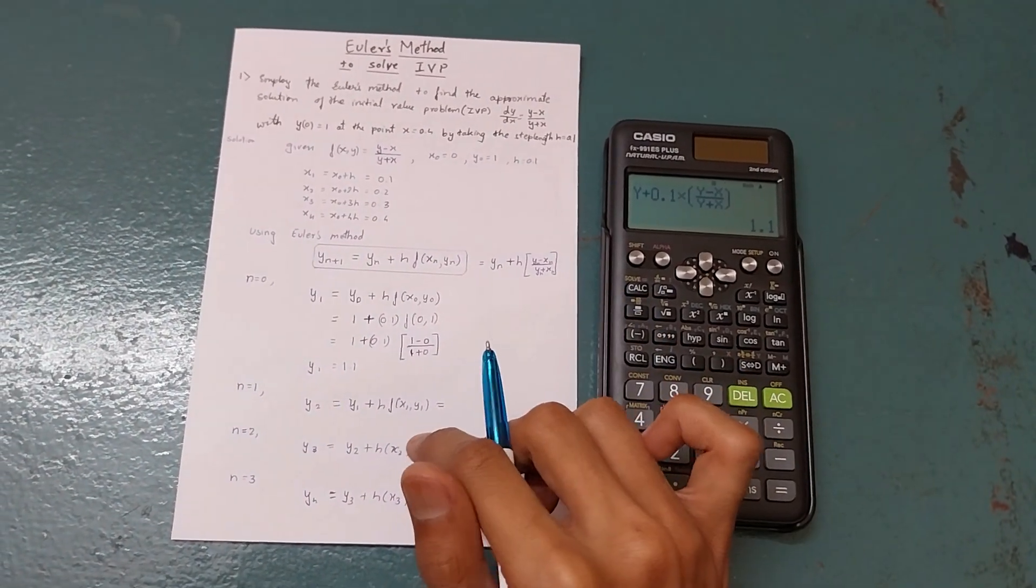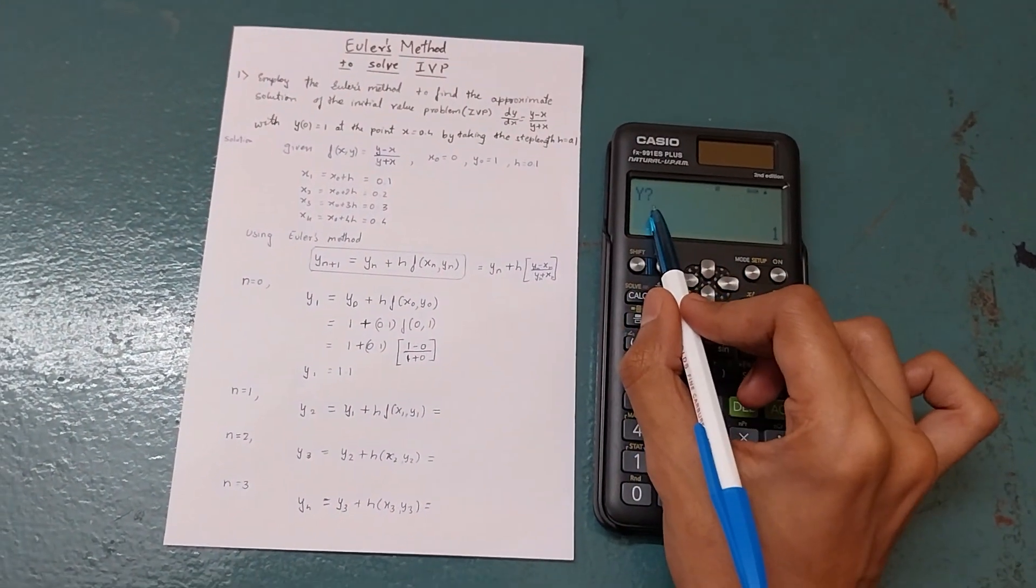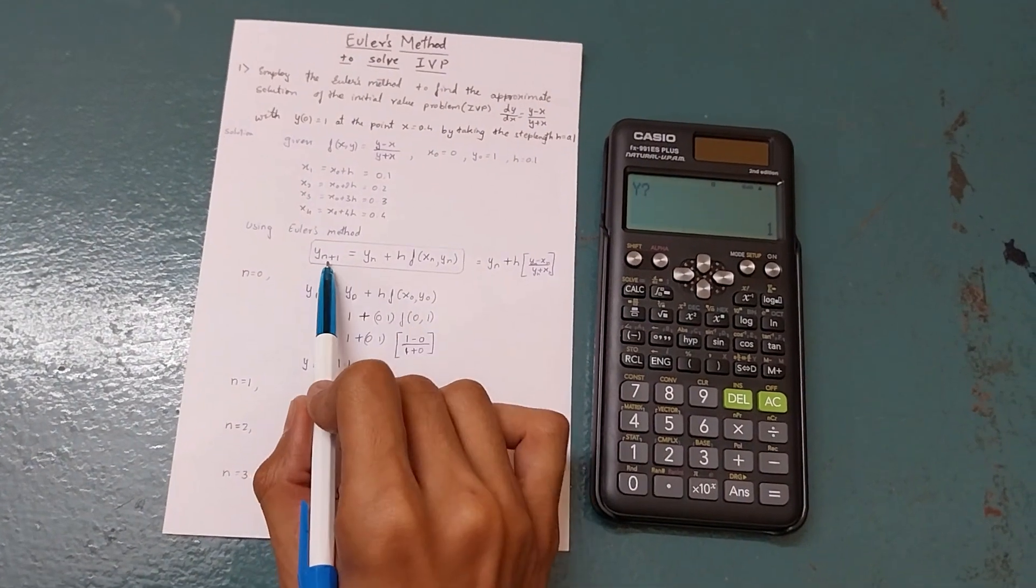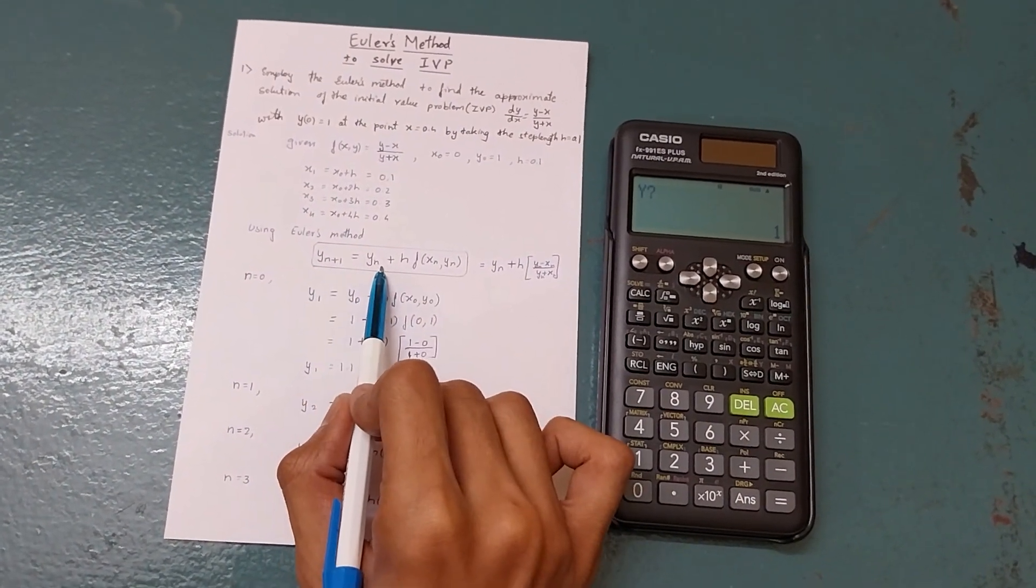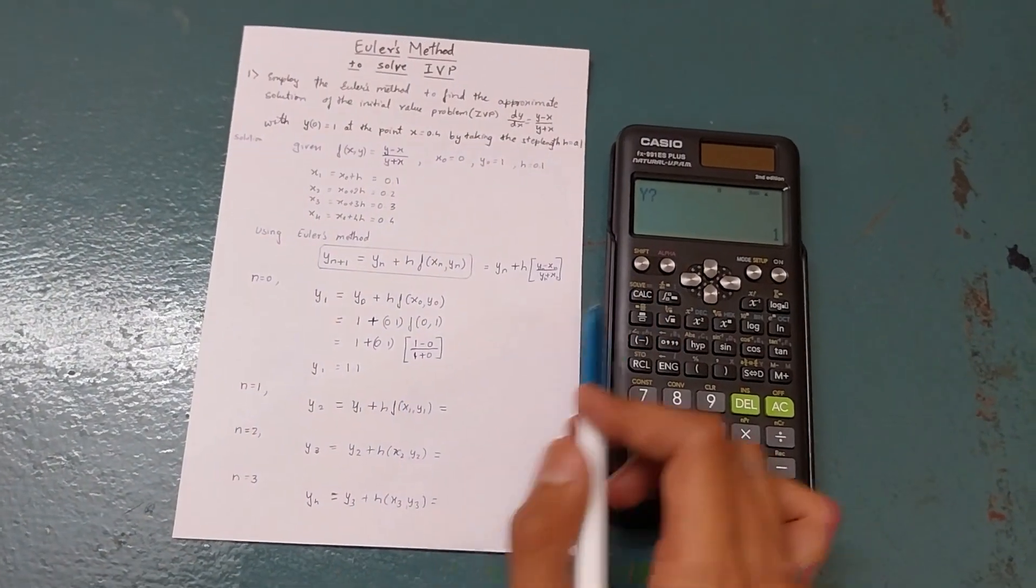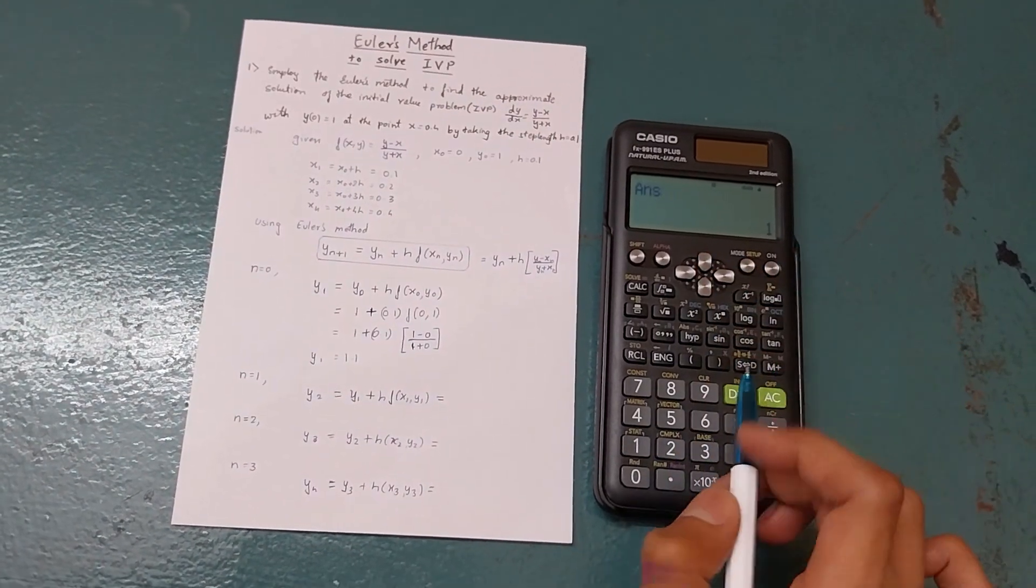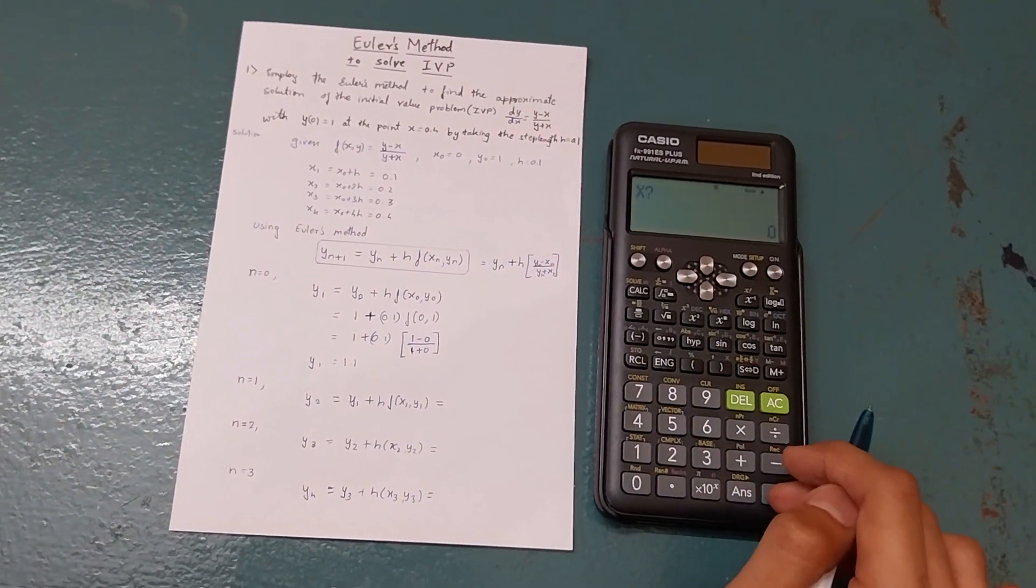For the second iteration, just press equals. It will ask you y value, and when it is n plus 1, it takes the n value, the previous value. So press answer for the y value.